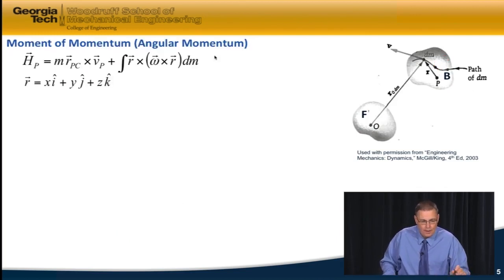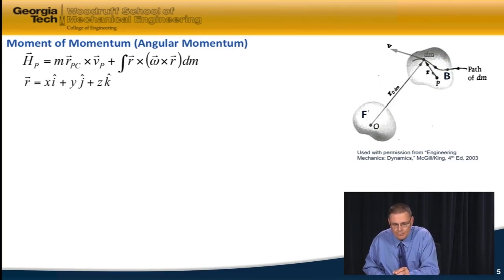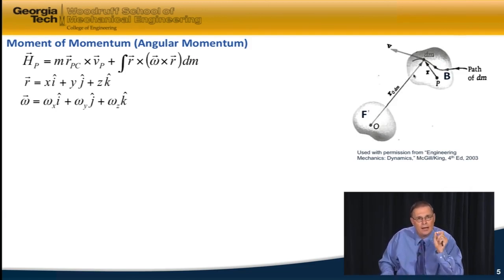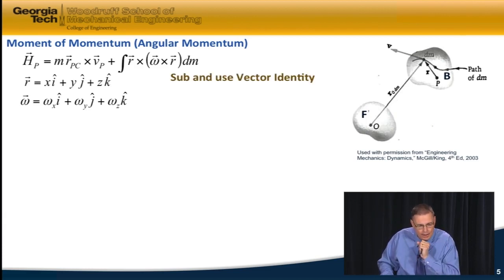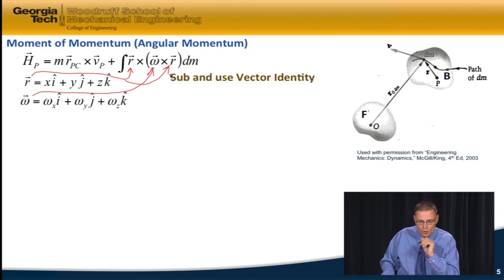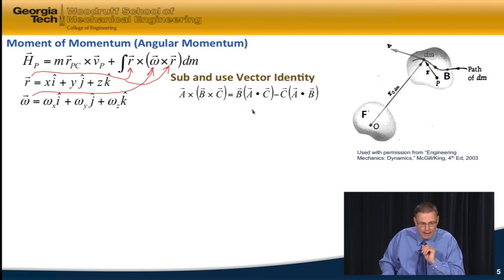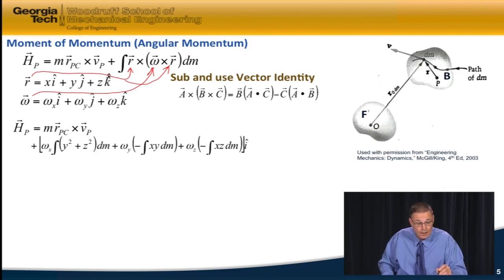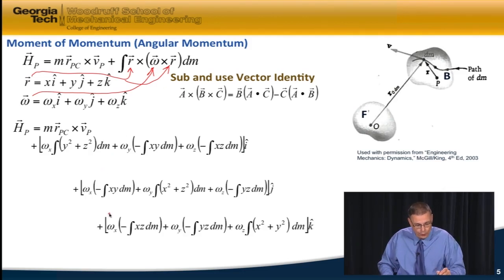Now, little r, as we look around the body at each point, is going to have some component in the x direction, some in the y direction, and some in the z direction. Omega, the angular velocity of the body, will also have x, y, and z components. I can substitute those in and use the vector identity I've used several times before. Doing the math, you get h of P equals the first term — m times R from P to C crossed with the absolute velocity of P — plus additional terms.